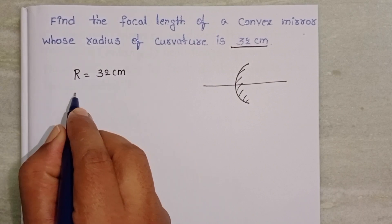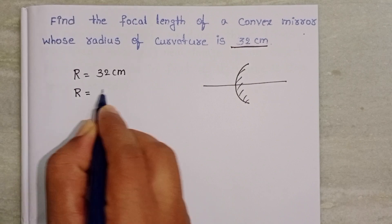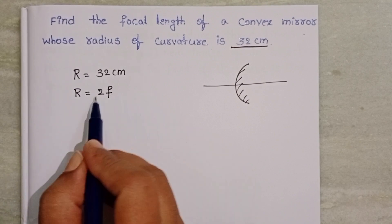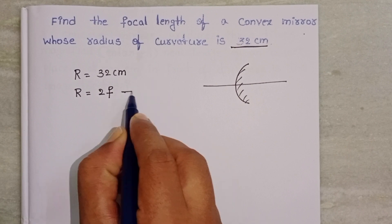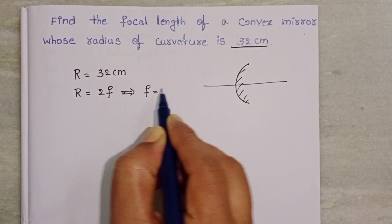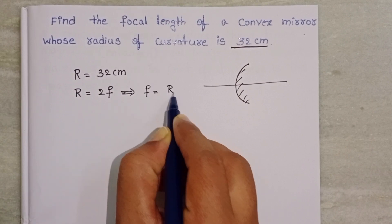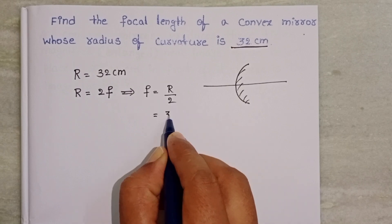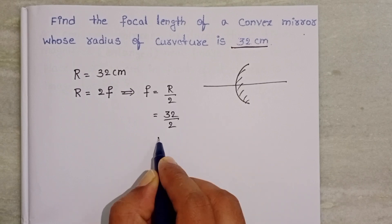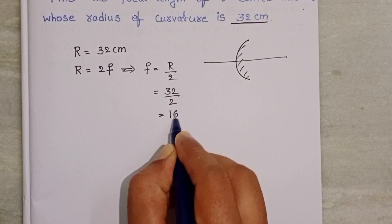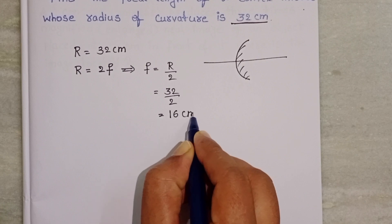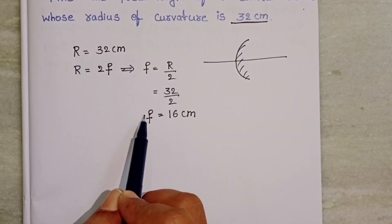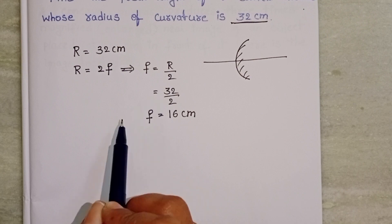The relation between radius and focal length is: radius equals 2 times focal length, so focal length is half of the radius of curvature. Therefore, focal length equals 32 divided by 2, which is 16 cm. Both the radius and focal length are positive for a convex mirror.